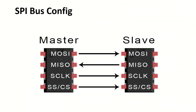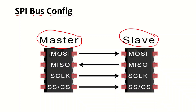Let's see SPI bus configuration — how the SPI bus is connected from master to slave. The SPI architecture is master-slave architecture. There are mainly four lines: first is MOSI, second is MISO, third is Serial Clock, and fourth is SS — chip select, also called slave select. SS means slave select; CS means chip select — both are the same.